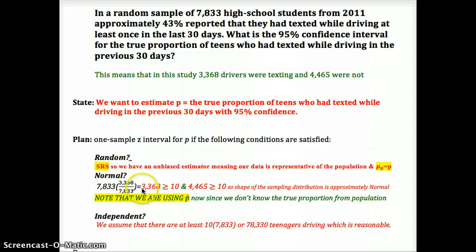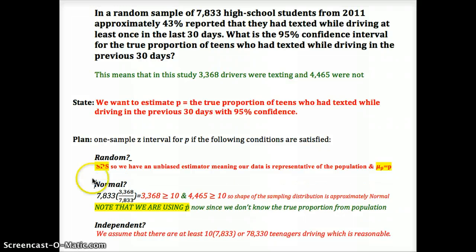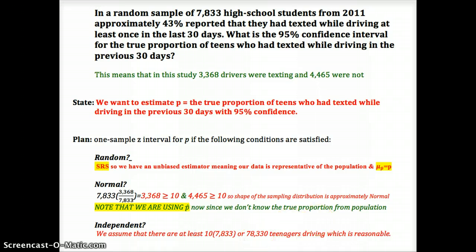Normal condition: the sample size is the denominator of p-hat, so those cancel — we just look at the numerator. 3,368 who texted is way bigger than 10; 4,465 who did not text is also bigger than 10. The normal condition is met and our sampling distribution is approximately normal. Independent condition: we assume there are at least 10 times the sample size, or 78,330 teenagers driving, which is reasonable.